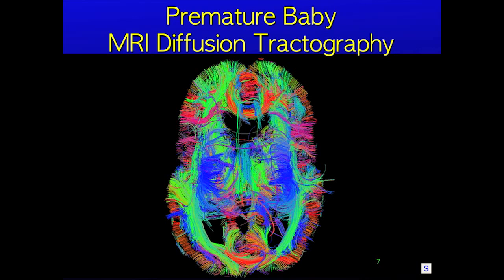Here I am showing a brain of a premature baby born 10 weeks early. We are looking from the top down with the face at the top of the frame. Blue fibers are connections running up and down and help the brain control its body. Red fibers run right and left and support communication between hemispheres. Green fibers are connections running front to back and back to front and support our cognitive functions. This type of information is extremely valuable and has great potential in helping us determine if parts of the brain are wiring normally before they actually come online.